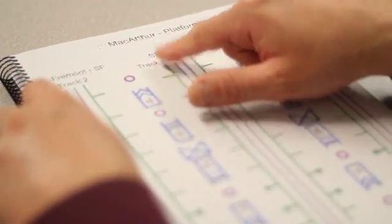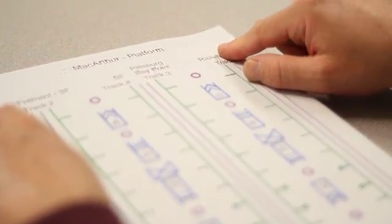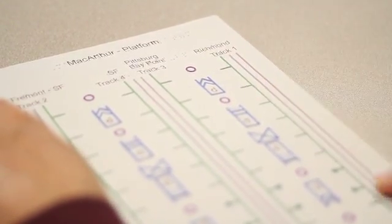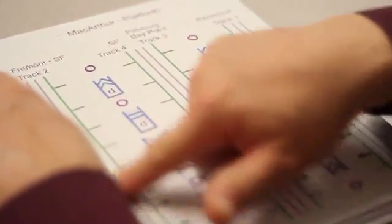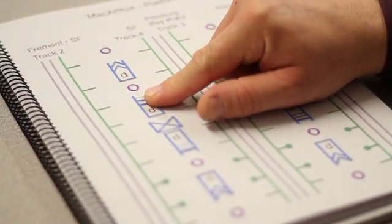The labels for each track are at the top of the map. In this case, we have Fremont and San Francisco at Track 2, San Francisco at Track 4, Pittsburgh Bay Point Track 3, and Richmond Track 1. Those are the names of the trains and the train lines that arrive at each of the four platforms on the MacArthur Station platform level. Also on each platform map, we have symbols indicating benches, escalators, stairs, and elevators.